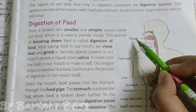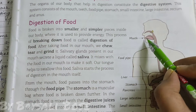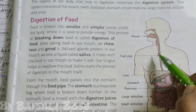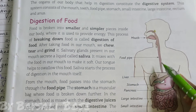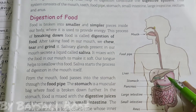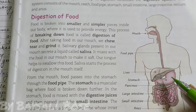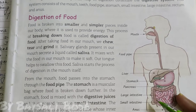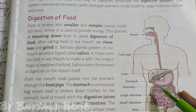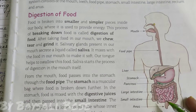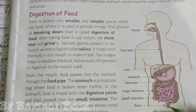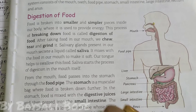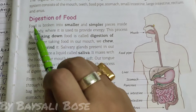Where does the food enter from? The food enters from your mouth, then it moves to the food pipe and then slowly to the stomach, then it moves to the small intestine, then it goes to the large intestine, and then the excretion comes out from the anus.